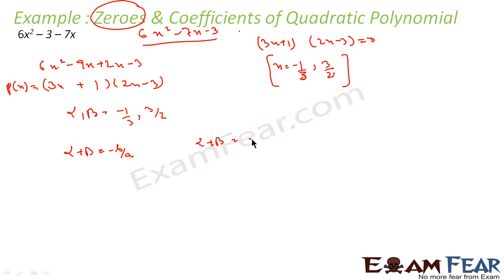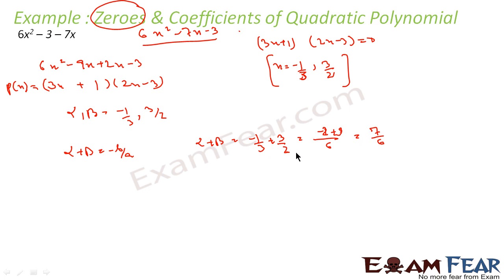α + β = −1/3 + 3/2. Taking 6 as the common denominator: (−2 + 9)/6 = 7/6. And −B/A = −(−7)/6 = 7/6. Both are equal, confirming α + β = −B/A.